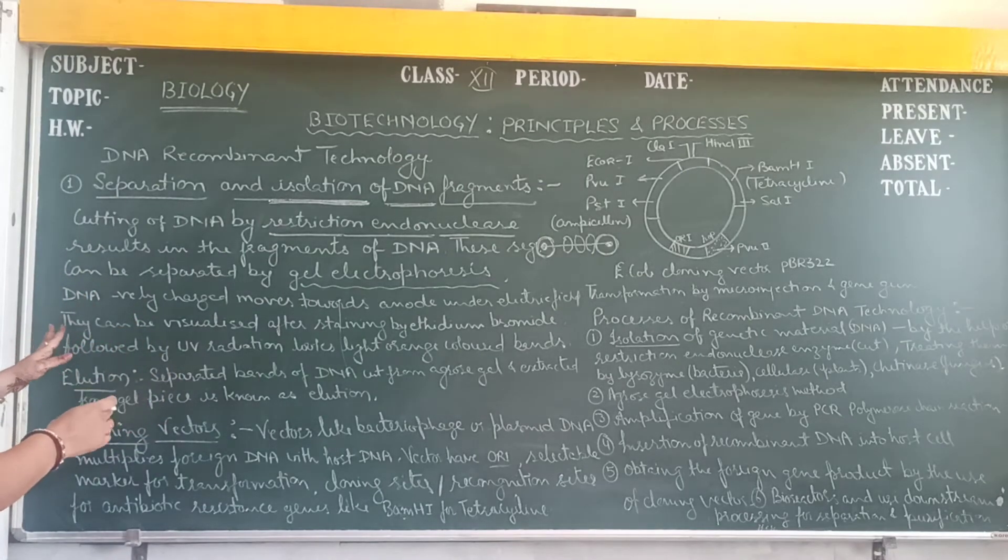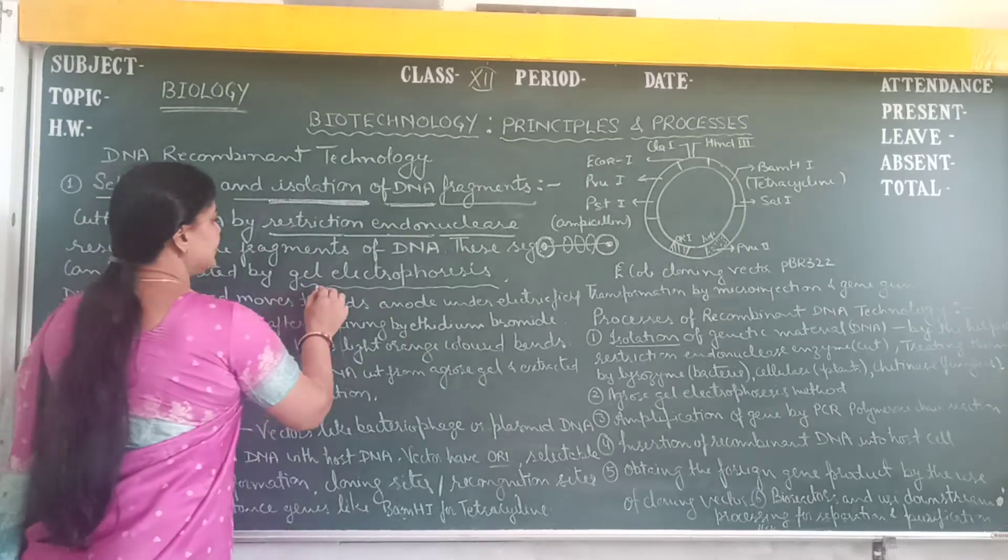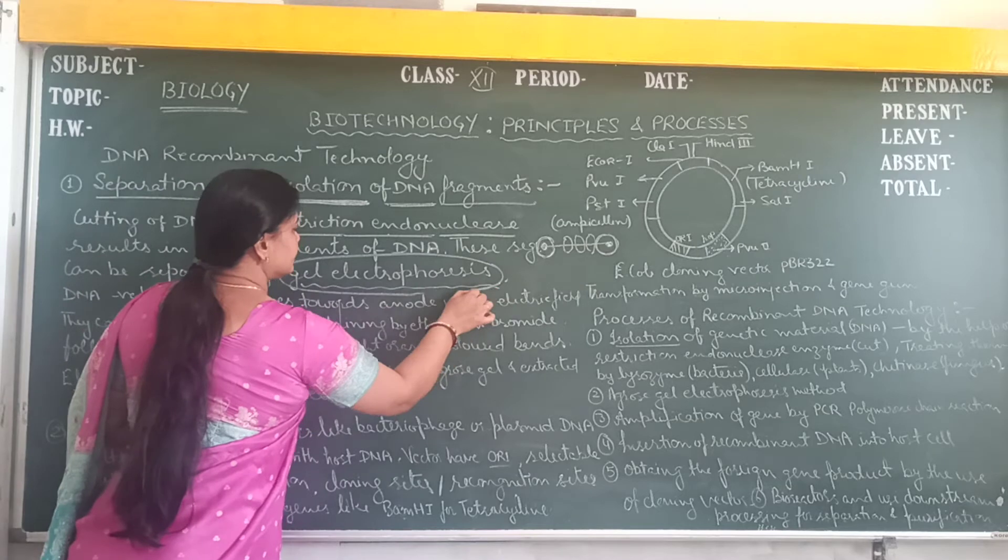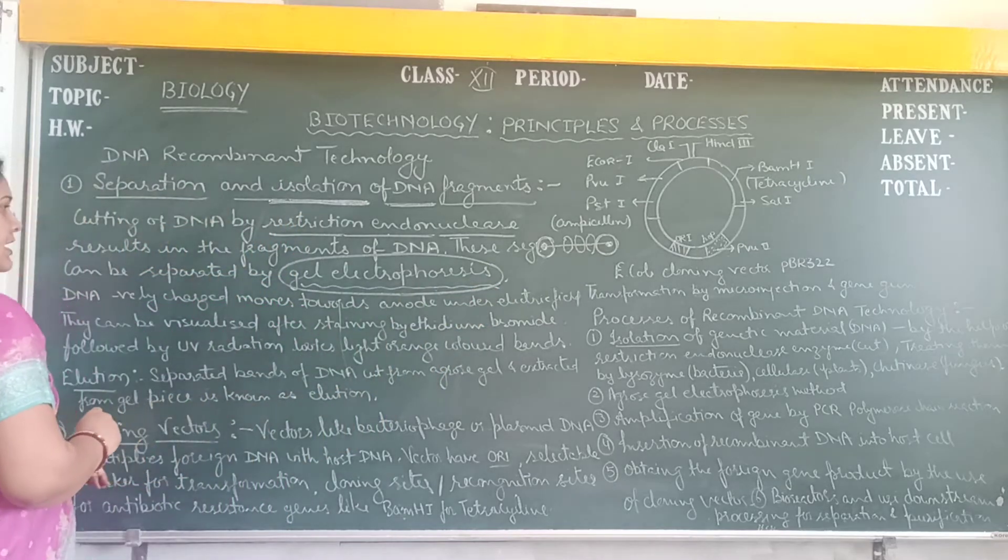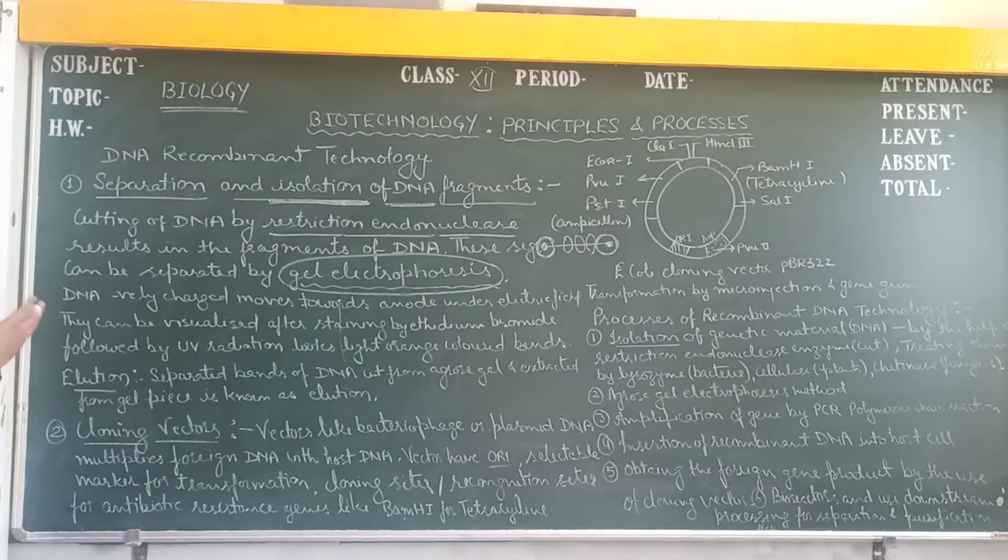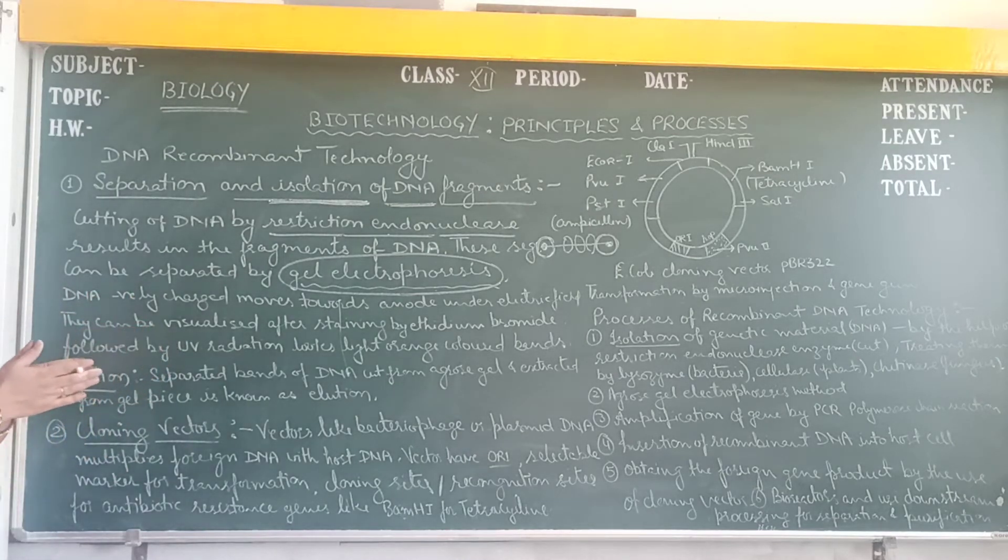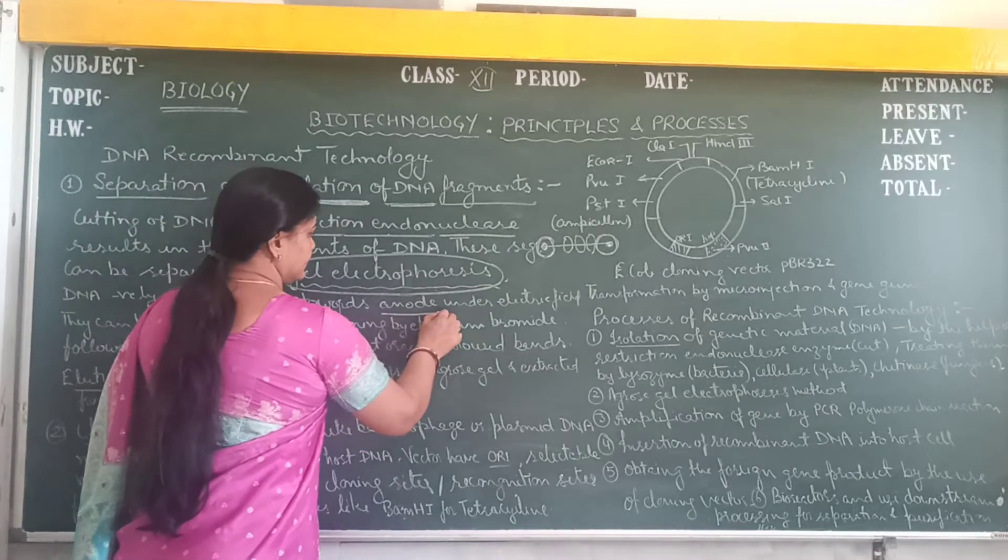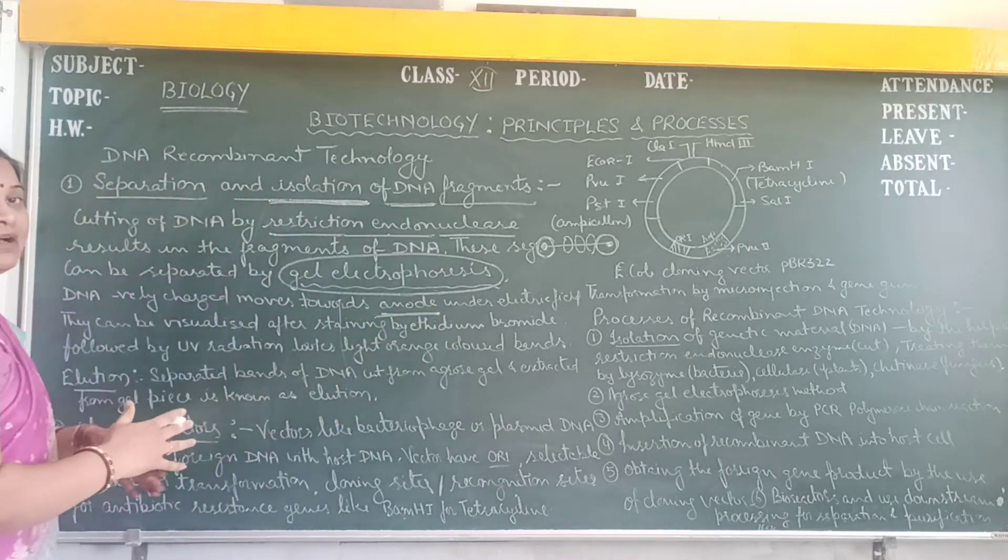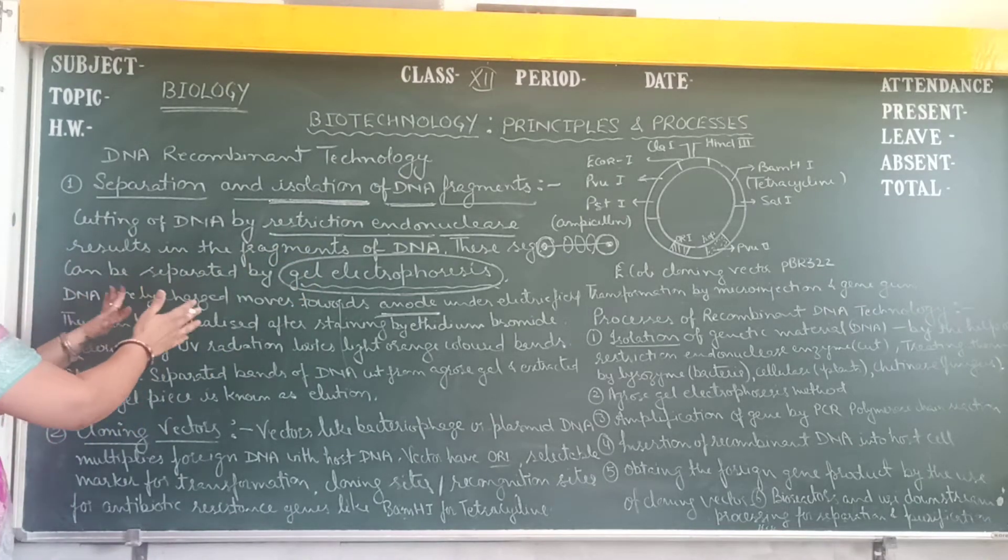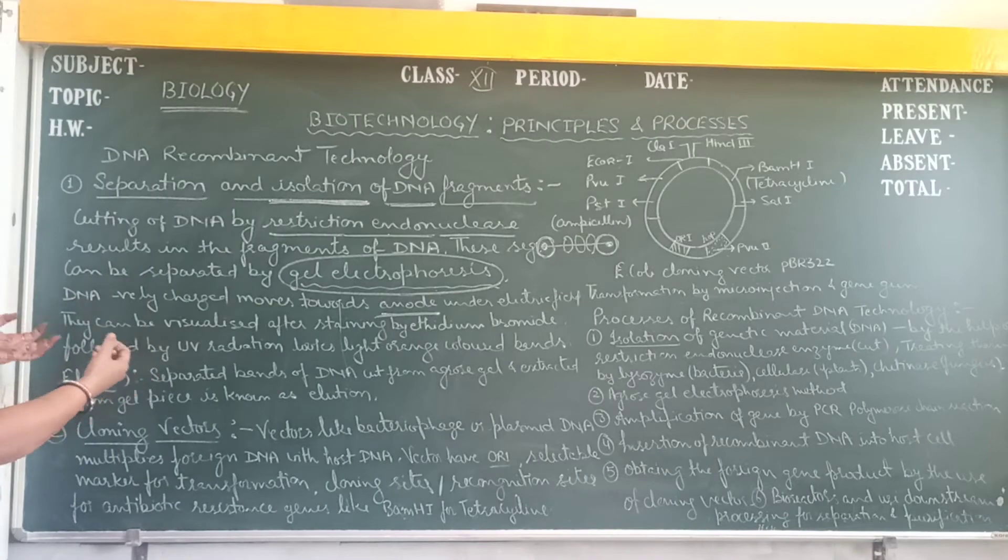Then these DNA fragments can be separated by gel electrophoresis. In this method, we use the agarose gel and also use ethidium bromide for its staining. We know that DNA is a negatively charged particle, so it moves towards the anode. Under electrophoresis, in this process, the gel electrophoresis, DNA moves towards the anode and we separate the DNA fragments.